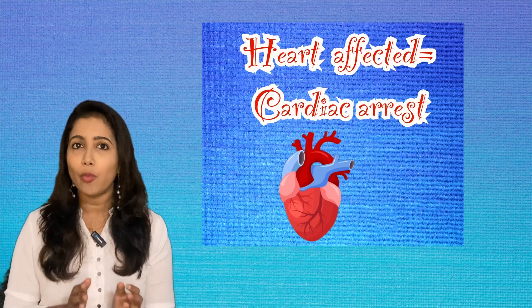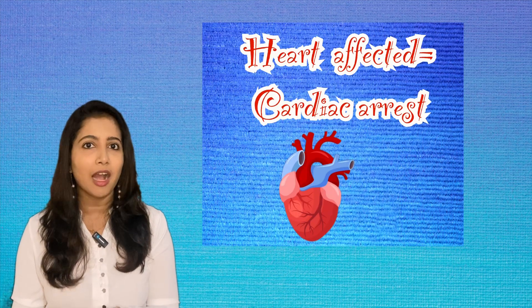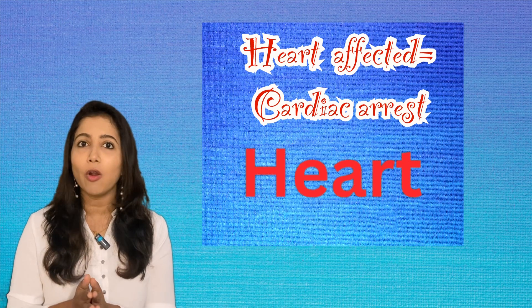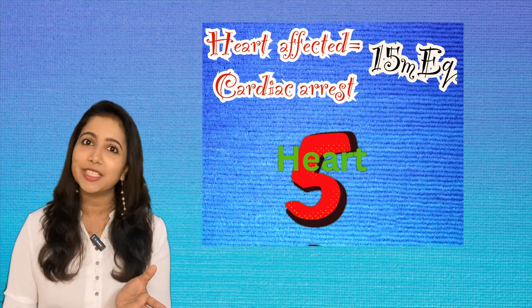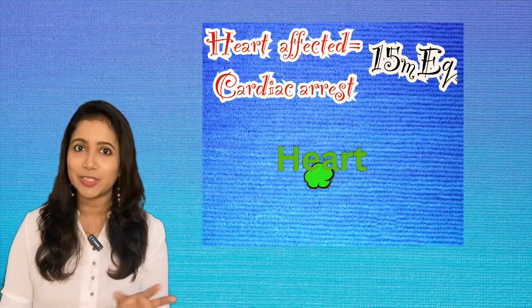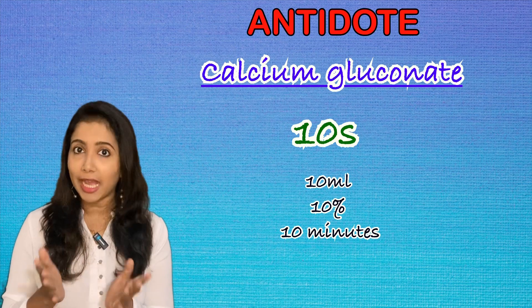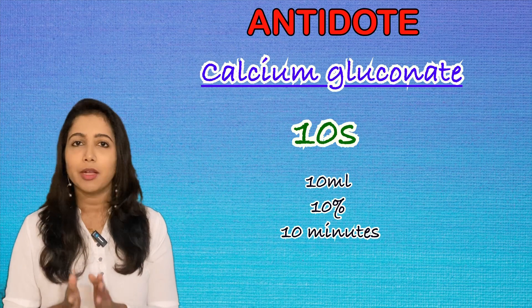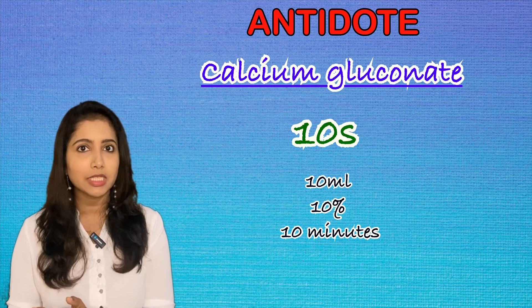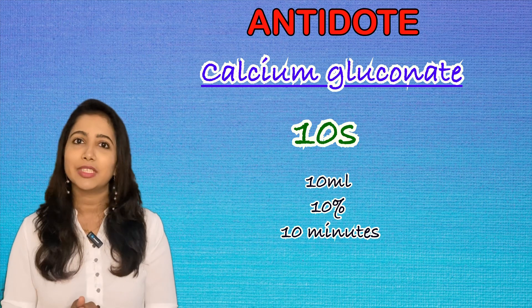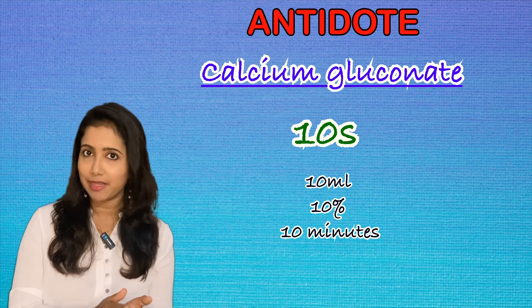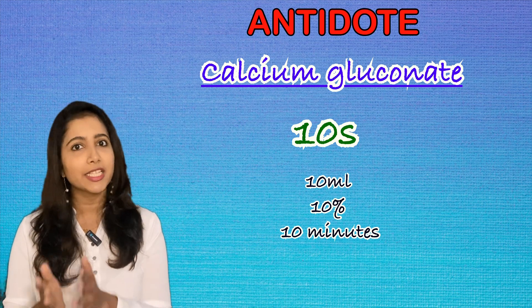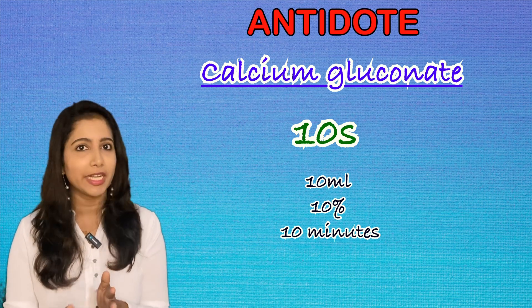When is the heart affected? The heart is affected at a level of 15 milliequivalents per liter. 'Heart' is a five-letter word, so you can remember the 'five' in 15. So the sequence is: knee jerk loss at >10, respiratory depression at >12, and cardiac arrest at >15. The antidote for magnesium sulfate toxicity is calcium gluconate — easy to remember: just remember 'tens' — that is, 10 mL of 10% calcium gluconate over a period of 10 minutes.